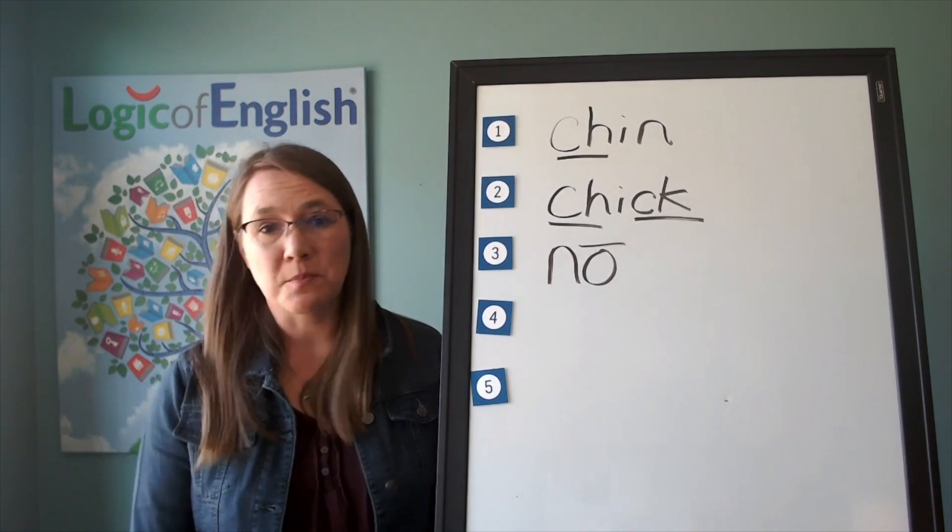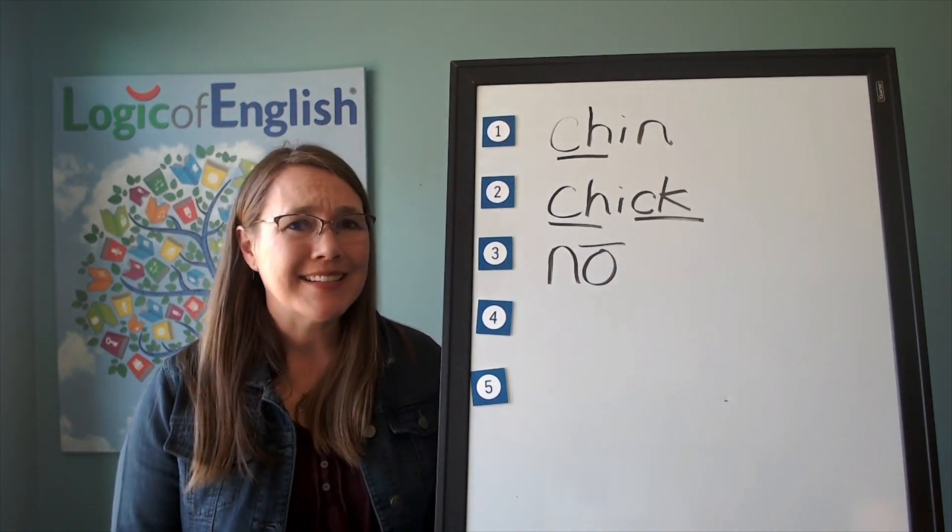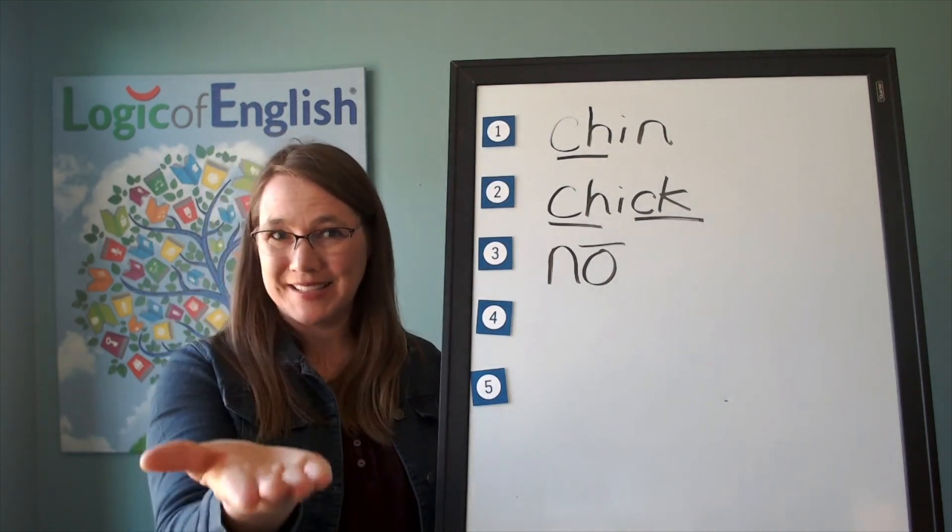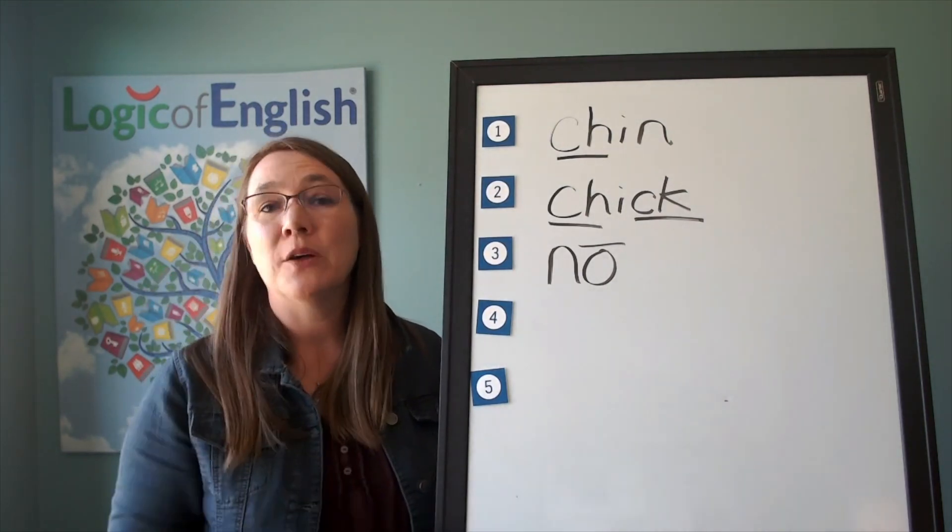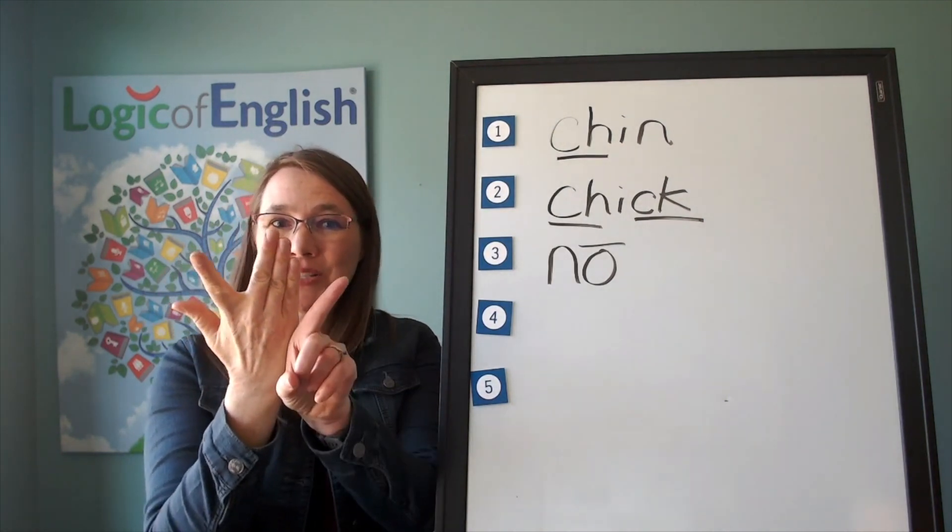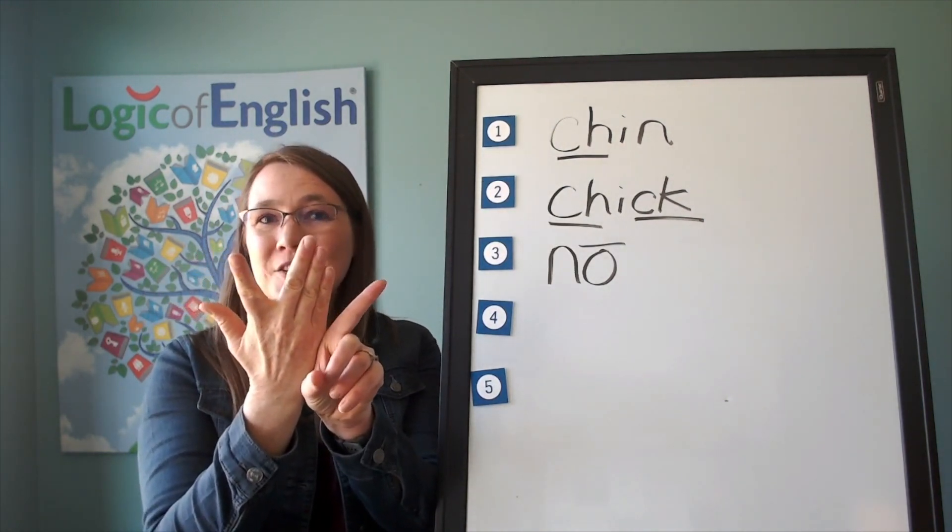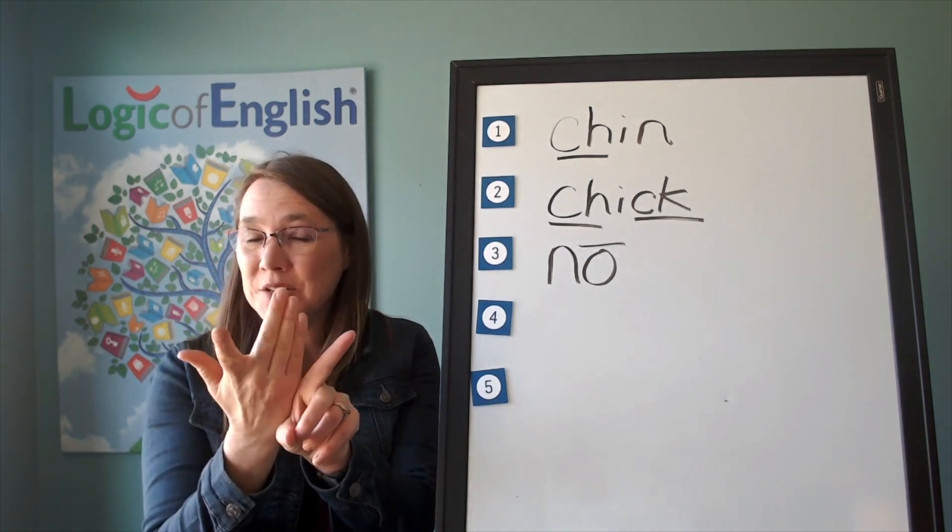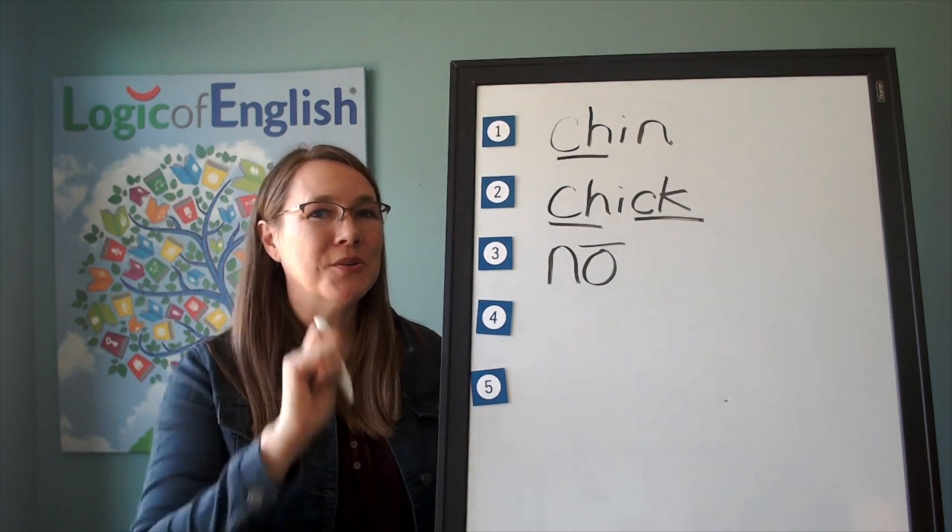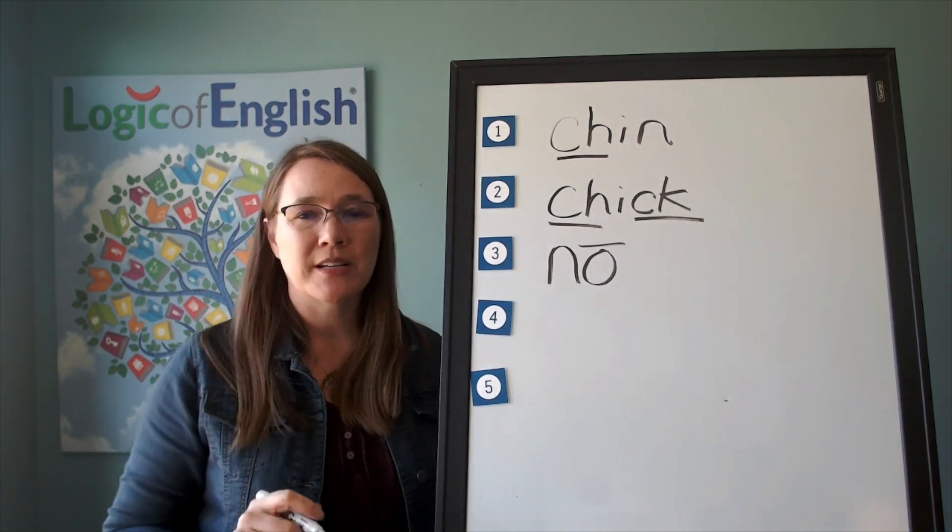The next word is bright. That light is very bright. Bright. Go ahead and say bright. Now let's sound it out. B-r-igh-t. Wow. That's a long word. And what kind of I did we use? Three-letter I. I know you can write it. I'll help you sound it out as you do.